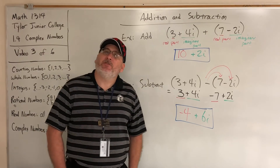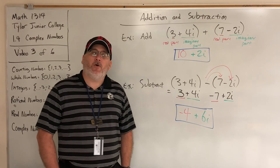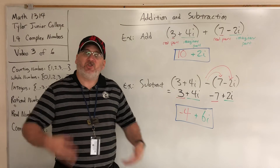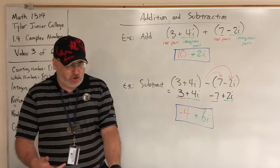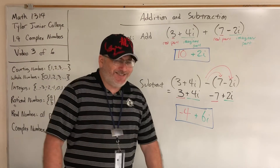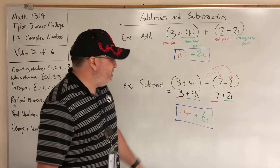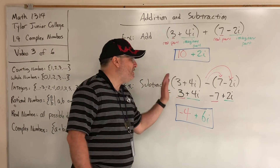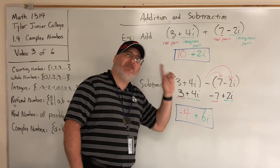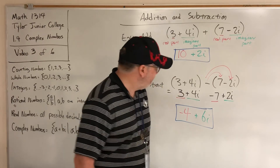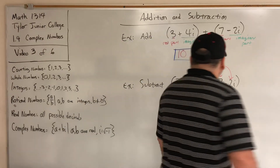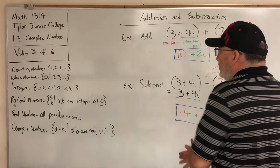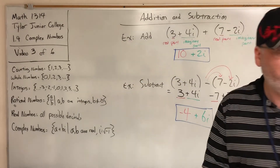The final result of the subtraction problem is negative 4 plus 6i. Addition and subtraction of complex numbers is something you've already seen before — it's combining like terms, after taking care of any distributed negative signs. And that concludes this video.